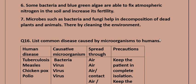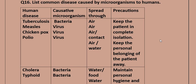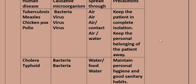Question 16: List common diseases caused by microorganisms in humans. Tuberculosis is caused by bacteria and spread through air. Measles and chickenpox are caused by a virus and spread through air. Polio is caused by a virus and spread through contact, air, or water. Precautions: keep the patient in complete isolation and keep the patient's personal belongings away. Cholera is caused by bacteria through food and water. Typhoid is caused by bacteria through water.